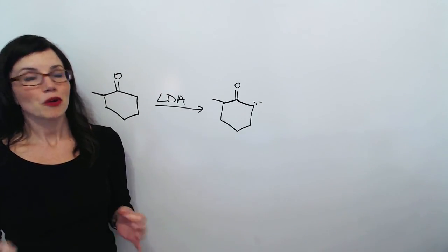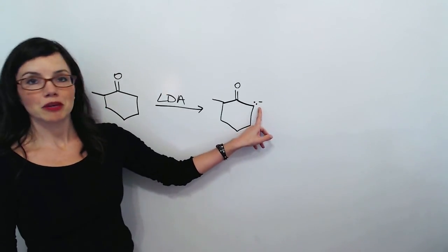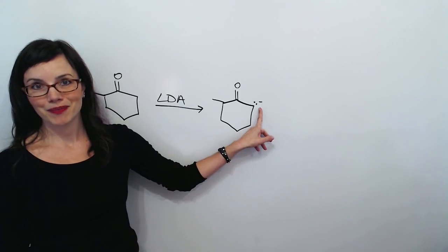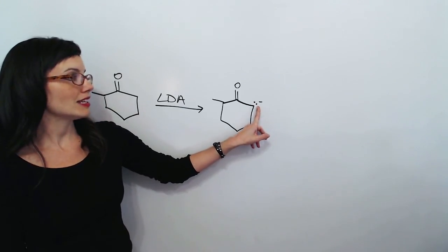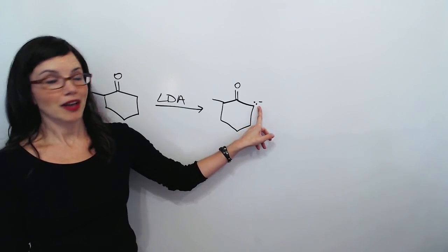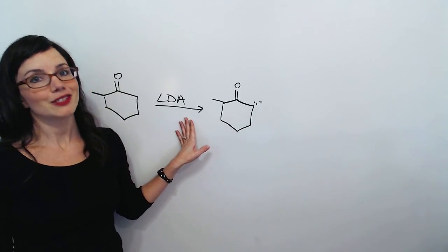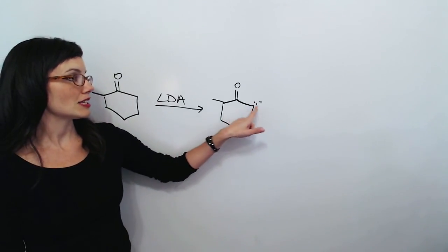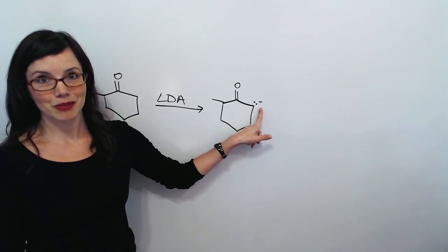When we're predicting products, we just create an alpha carbon that has an electron pair. And we've chosen the less substituted one. Because our base is LDA, a super strong bulky base. So, we always choose the less substituted kinetic product.